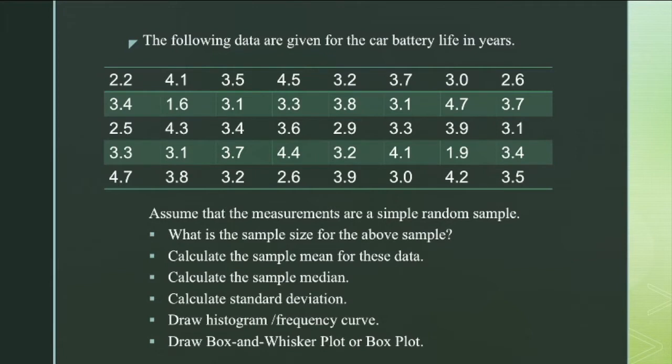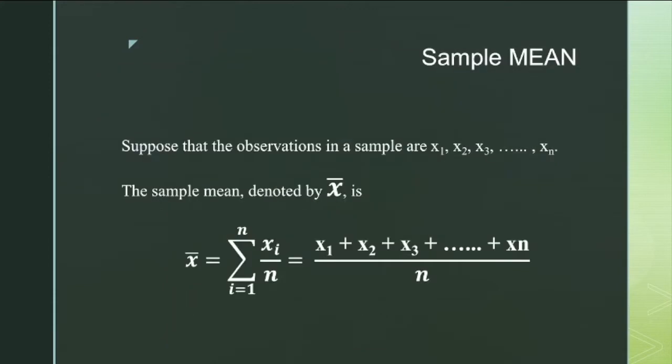As I told you earlier, there are two things. One is central properties, then the other is the spread of the data. So these two things can be identified if we understand the basic standard variables like mean, mode, median, standard deviation, variance, quartiles, etc. These are a few questions here. What is the sample size? It's nothing but 40. Calculate the mean. Calculate the sample median. Calculate the standard deviation. Draw the histogram. Draw the box plot.